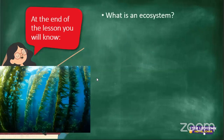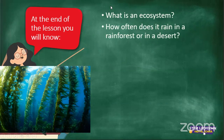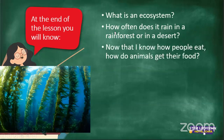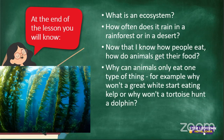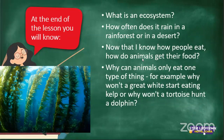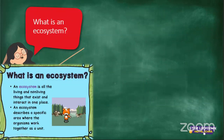Today we're basically going to be discussing ecosystems. By the end of this lesson, we're going to know what an ecosystem is, how often it rains in a rainforest or in a desert, how animals get their food, and why animals can only eat one type of thing. For example, why won't a great white shark eat kelp? Why won't a tortoise hunt a dolphin? Kelp is just some seaweed. These are our objectives for today.